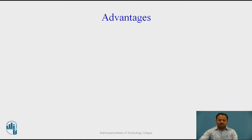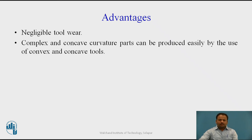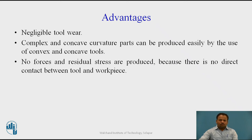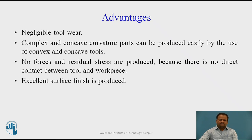This process has certain advantages. There is negligible tool wear. Complex and concave curvature parts can be produced easily using convex and concave tools. No forces or residual stresses are produced because there is no direct contact between the tool and work piece. Excellent surface finish is produced due to the control system providing a continuous constant feed. Less heat is generated because the material removal process is the reverse of electroplating.